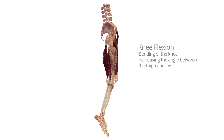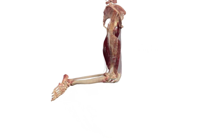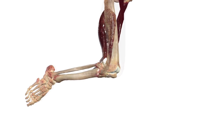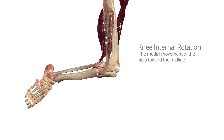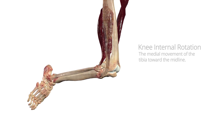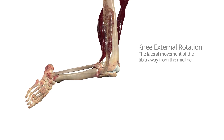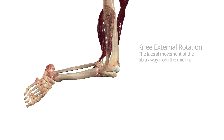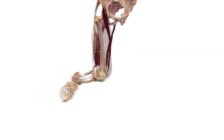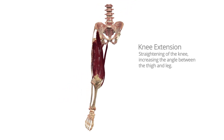Knee flexion is the bending of the knee, decreasing the angle between the thigh and leg. Knee internal rotation is the medial movement of the tibia toward the midline. Knee external rotation is the lateral movement of the tibia away from the midline. Knee extension is the straightening of the knee, increasing the angle between the thigh and leg.